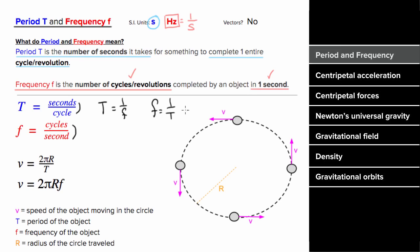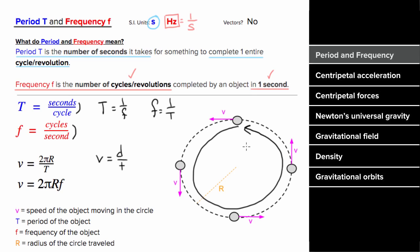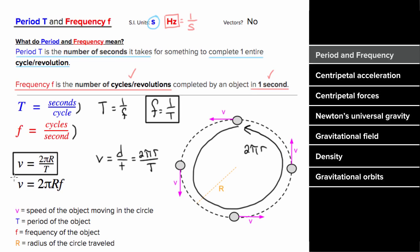One example of a repeating process is an object going in a circle at a constant speed. If this is the case, you can relate the speed, the radius of the circle, and the period of the motion. Since speed is distance per time, and the distance traveled in one cycle is two pi r (the circumference), the speed is two pi r divided by the period. Since one over the period is the frequency, you could also write the speed as two pi r times the frequency.